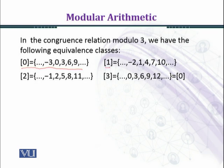In one class, we have minus 2, 1, 4, 7, 10 and so on. And in the similar manner, in the class 2, class 2 means that when we divide an integer by 3, we shall get remainder 2. And those numbers which give us remainder 2 are minus 1, 2, 5, 8, 11 and so on.